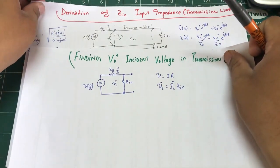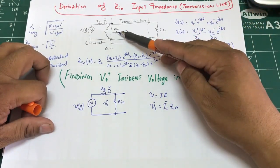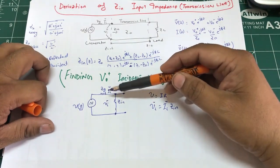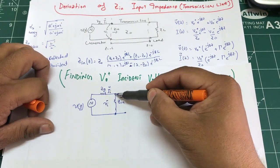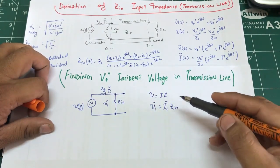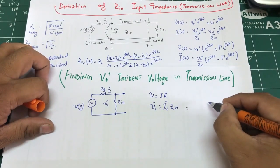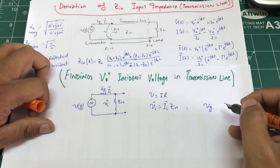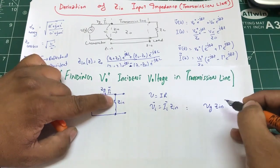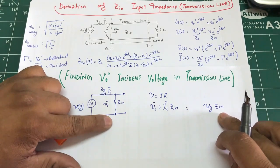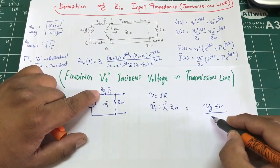So the premise of what we're doing: we had a circuit, now we know what Zin is, and we want to find out what is V₀⁺ going inside that transmission line. To find Vi, right at that point, this is nothing but a voltage divider. The voltage divider looks like: Vg times Zin — I want to find the voltage across Zin, so it goes on top.